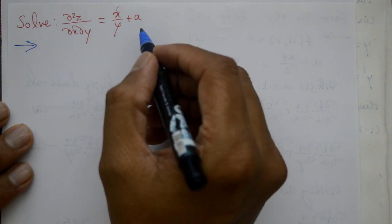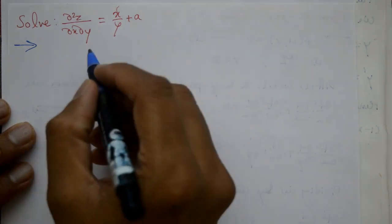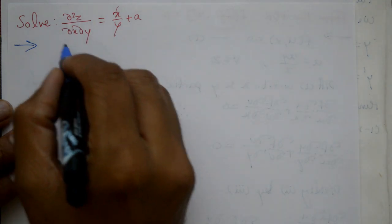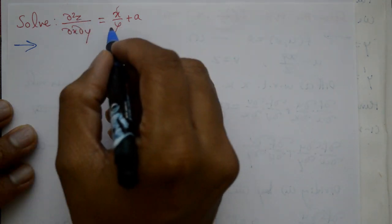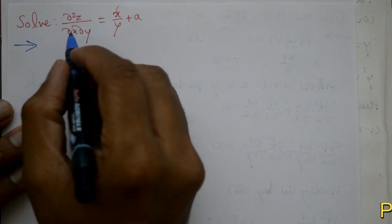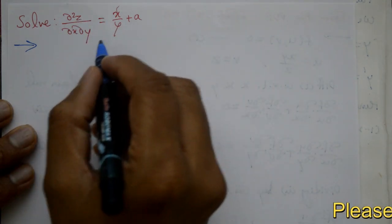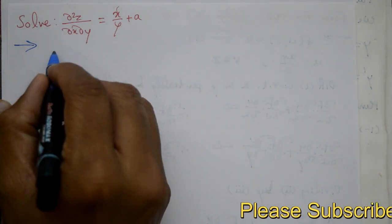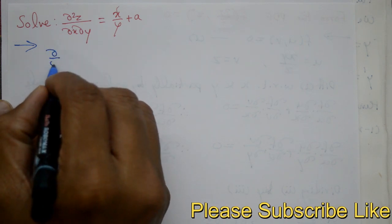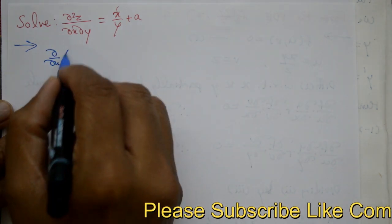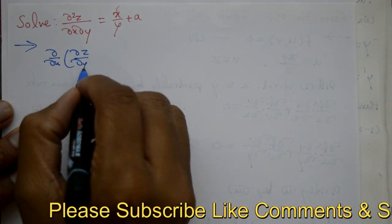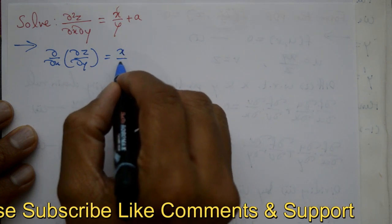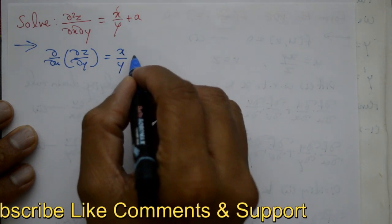This partial differential equation can be written in the form: (d/dx)(dz/dy) = x/y + a.